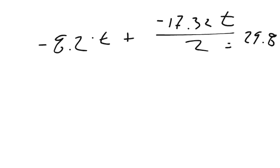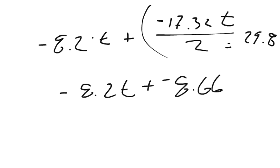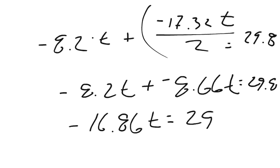Now, we just have to solve it and find out if it does equal that. So, I can simplify this really quick by dividing the 17 by 2. And so, it's going to be negative 8.2 t plus negative 8.66 t equals this 29.8. And so, I can combine my like terms. I add my negatives, so that's negative 16.86 t equals 29.8.